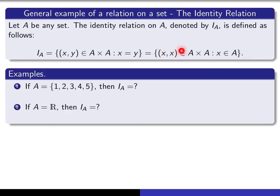And so that looks like this. It's the set of all ordered pairs in which both components are exactly the same. And what is the identity relation on the set of real numbers? It's the set of all ordered pairs of the form (x, x) as x varies over R.